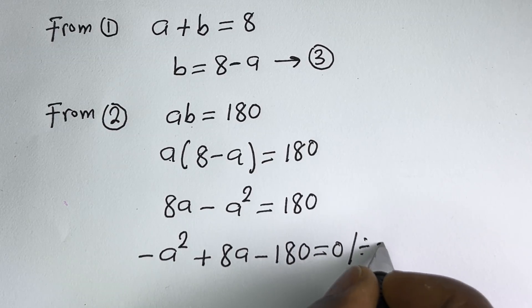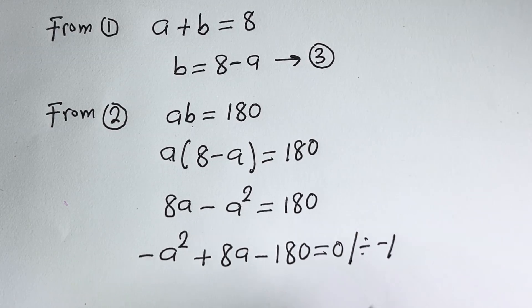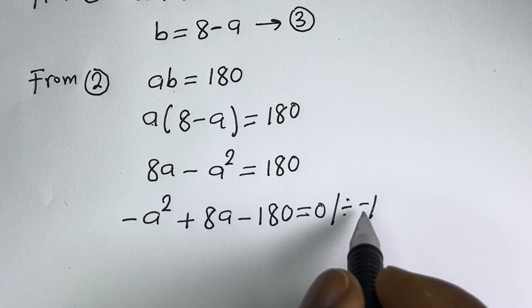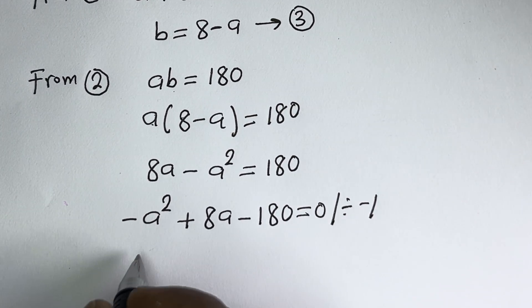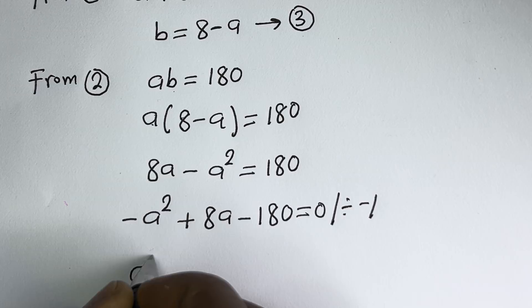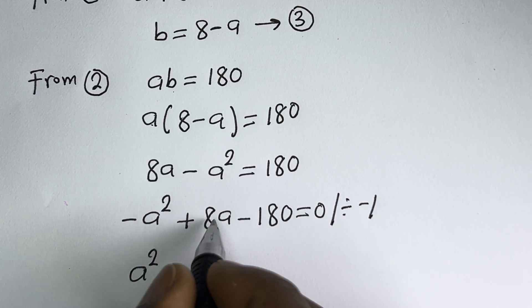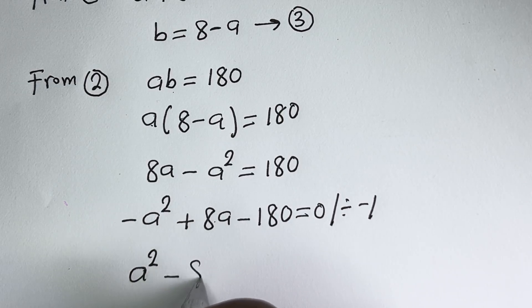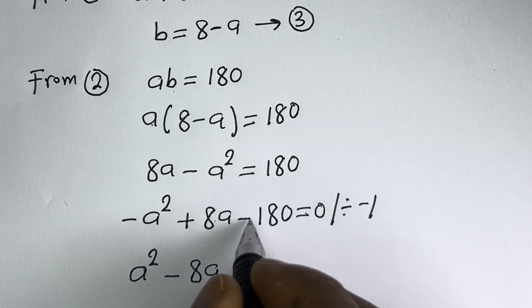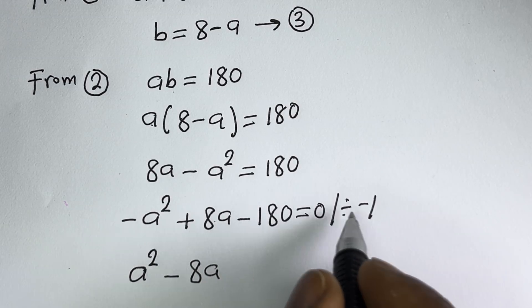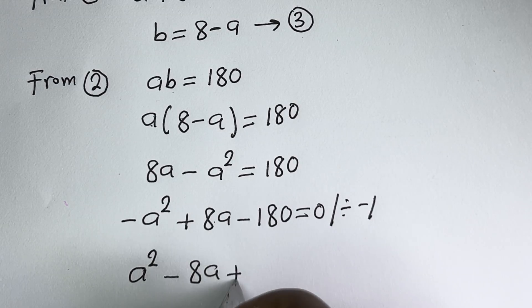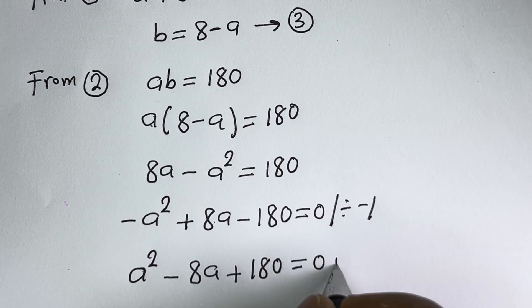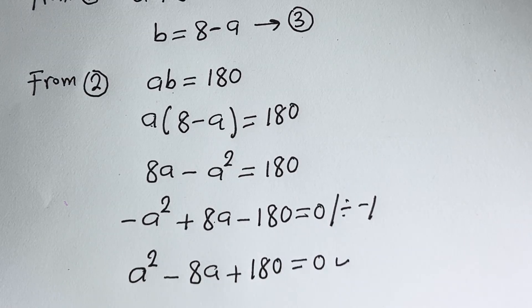Let's divide all through by minus 1. Minus A squared divided by minus 1 is A squared. Plus 8A divided by minus 1 is minus 8A. Minus 180 divided by minus 1 is plus 180, equals 0. This is a quadratic equation. Let's solve this using the quadratic general formula.